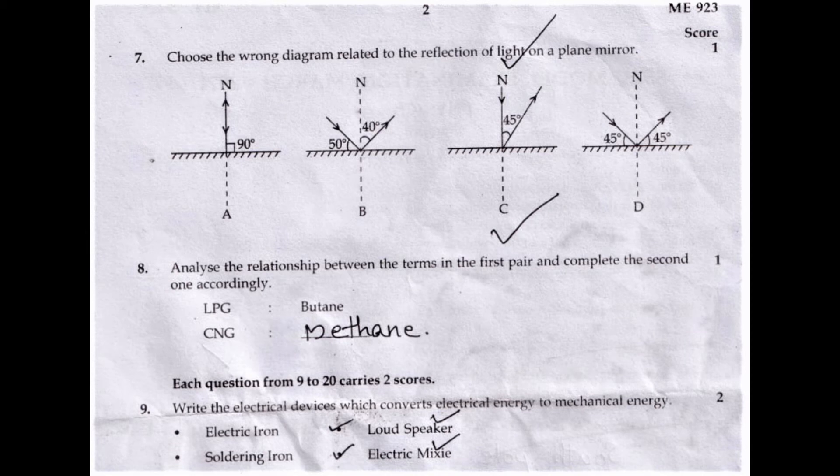Seventh question: Choose the wrong diagram related to the reflection of light on a plane mirror. Answer: graph C.